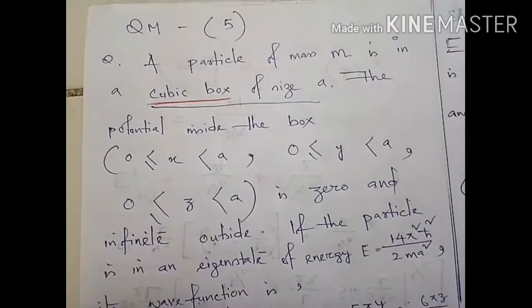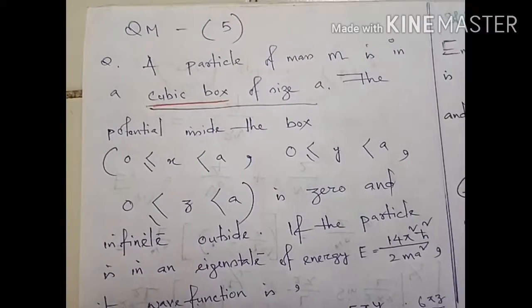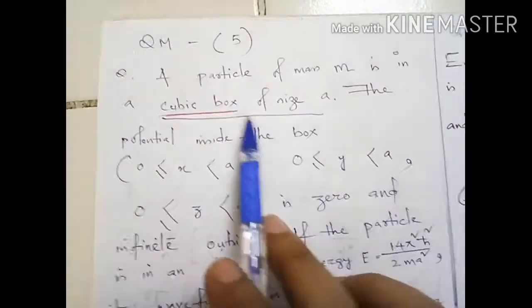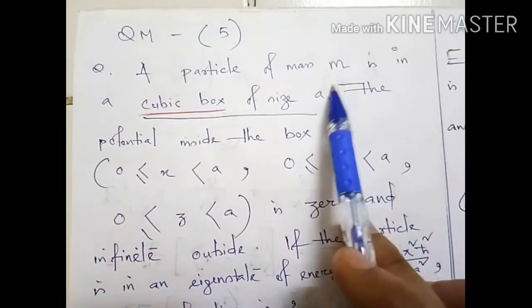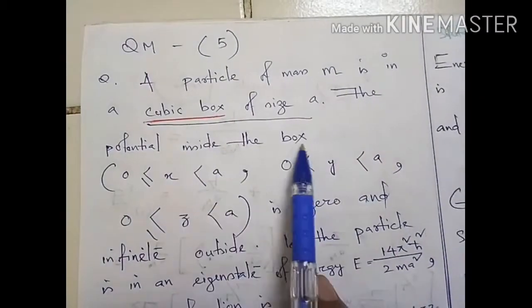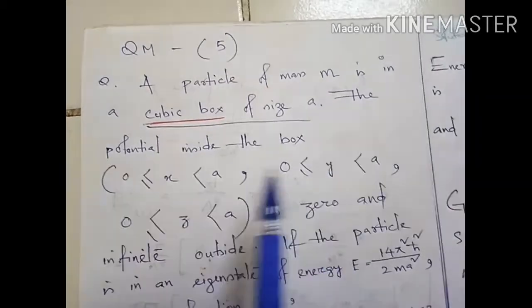Hello everyone, this is a question from 3D potential box. So let's begin with the question: a particle of mass m is in a cubic box of size a, and the potential inside the box is in a cubic box.